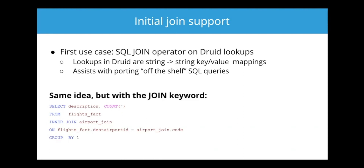Some of the benefits are cosmetic: it looks more like the SQL you're used to, it helps analysts understand what's going on, and it's more familiar. This kind of query can be generated automatically by business intelligence applications, whereas they cannot automatically generate lookup queries — so it aids integration with those applications. It also helps onboard people who aren't familiar with Druid's language. Beyond cosmetics, there are under-the-hood improvements: the SQL layer actually knows what the lookups are now, so it can validate them at planning time. Previously with the lookup function, it just knew they were strings and couldn't validate invalid schemas.